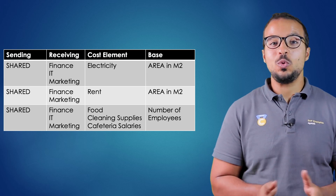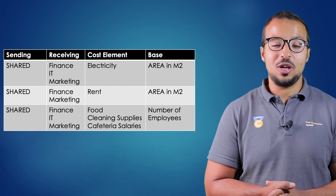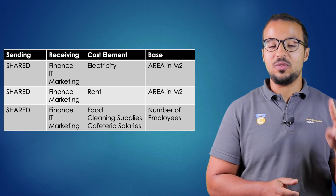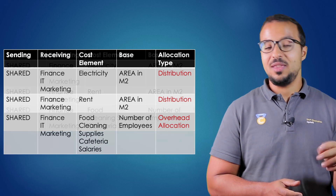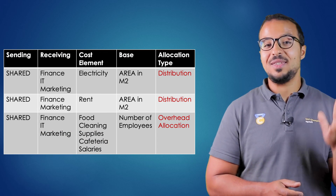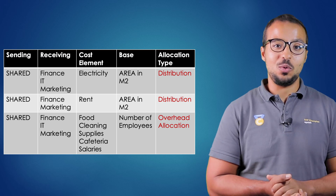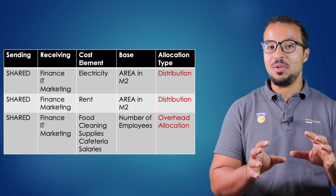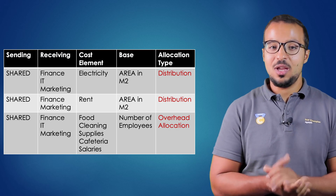We also have to choose the allocation type, and here we have mainly two different types: the first is distribution, and the second is overhead allocation. Let's take an example because this part can be confusing.